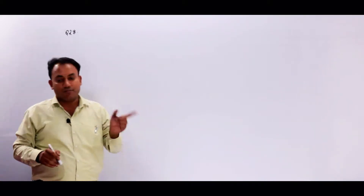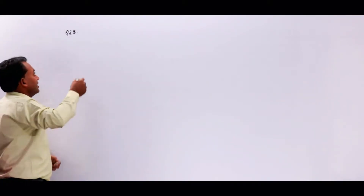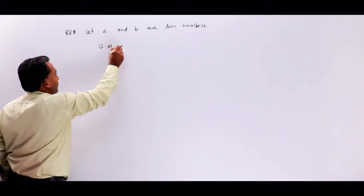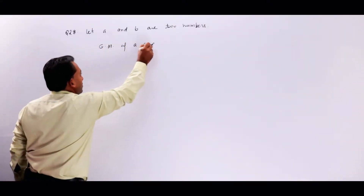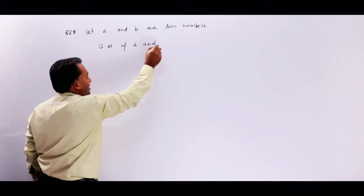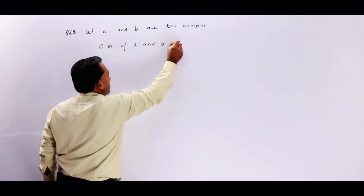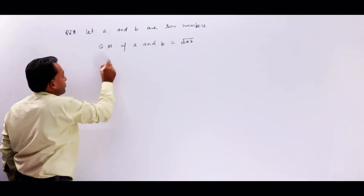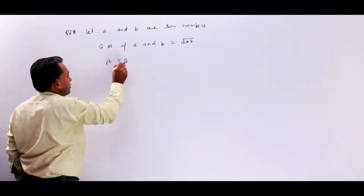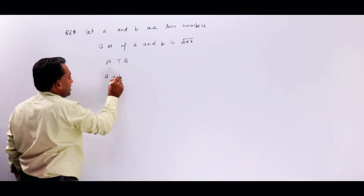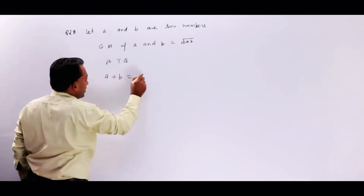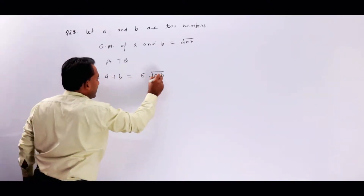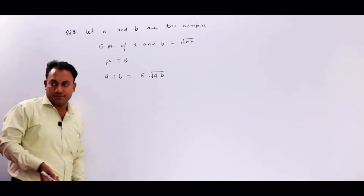तो पहले हम वो numbers ले लेते हैं। Let A and B be two numbers. Geometric mean of A and B is equal to √(AB). According to question, A + B is equal to 6 times √(AB). यह given है।